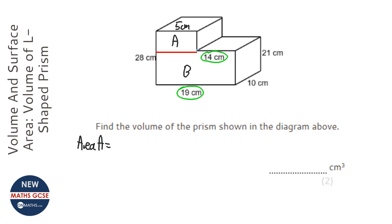five centimeters. Going the other way, the total height is 28, the bit we don't want is 21, so therefore we've got seven left over. So the area is going to be five times seven, which is 35.